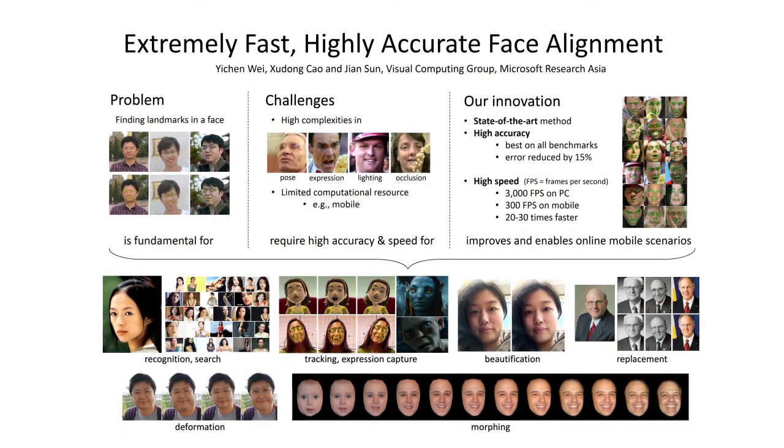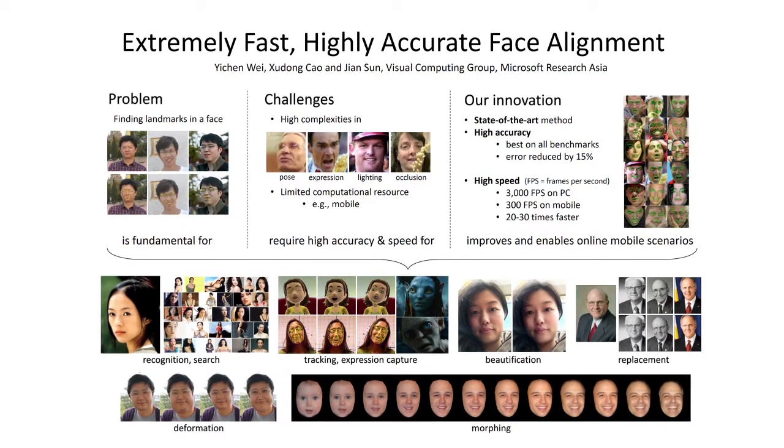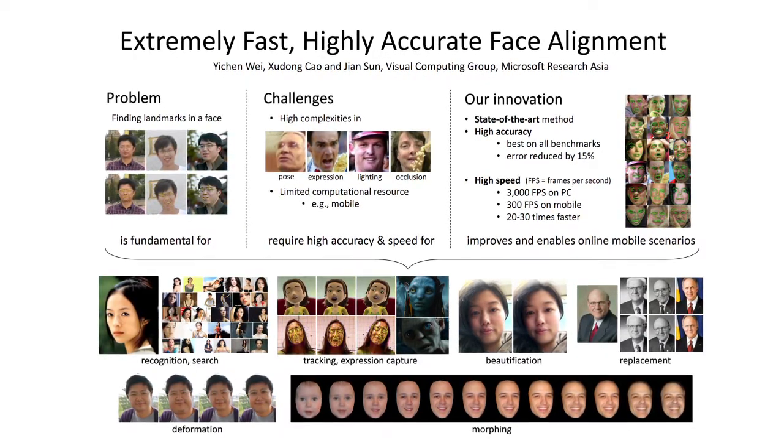Our algorithm is extremely fast. On a common PC, you can align a set of 68 facial landmarks in less than 0.5 milliseconds, and it is also highly accurate. Compared to the best existing algorithm, our accuracy is better by a margin of 15%, with speed faster by 20 to 30 times.